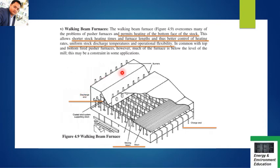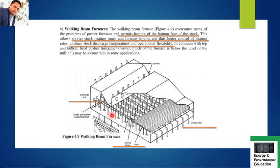Another type is the walking beam furnace, where the stock is placed on a beam that is ultimately moving. This is the charge end and this is the discharge end. As the beam moves, the stock also moves inside the furnace and gets heated up. In this type of furnace, the beams on which the stocks are piled up are the moving part - not the stocks themselves. The beams are moving and the stocks get heated up inside the furnace. They may ask you to briefly explain this type of furnace and differentiate between the different types of furnaces explained in this video.